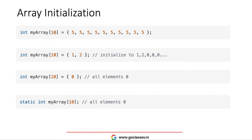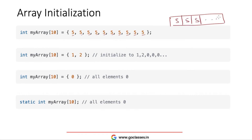There are ways to initialize the array. The first way is that you mention the size, which is 10, and then write down 10 different values or the same values depending on your initialization. For example, if every value is 5, then there will be ten 5s. Suppose instead of 5 you write 15 — after 1 2 3 4 there will be 15.